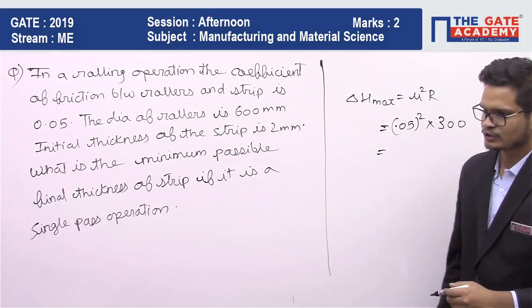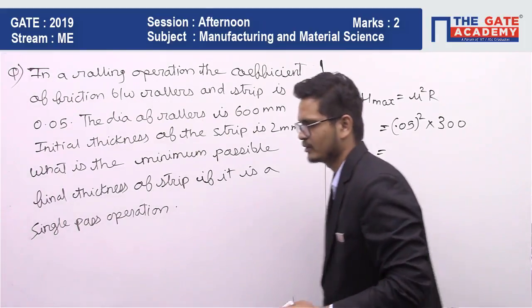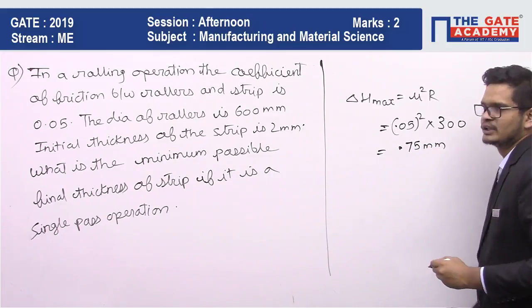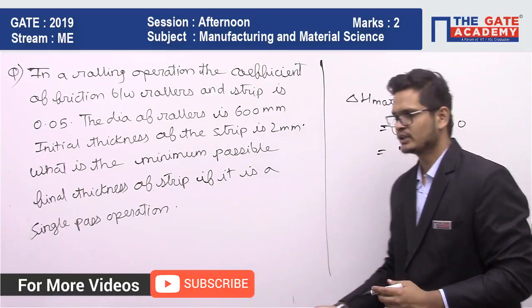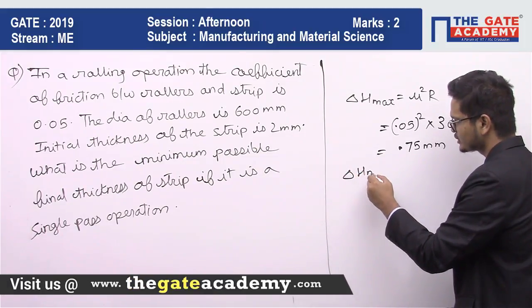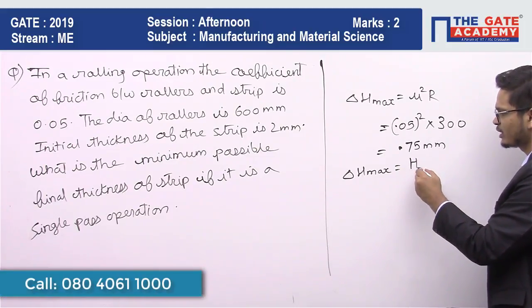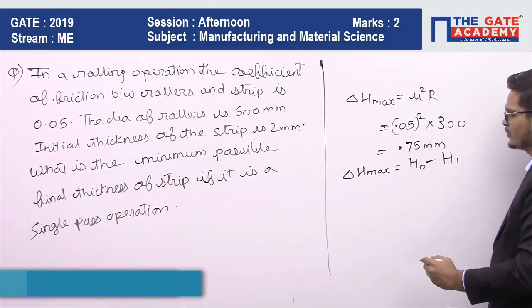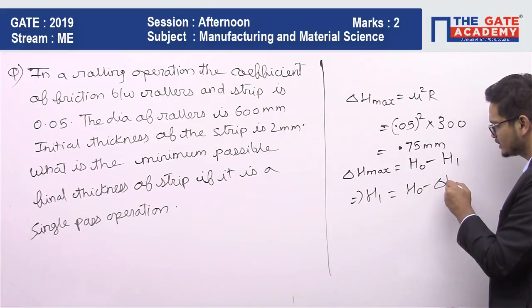This is delta H max. So the value of delta H max that we get is 0.75 mm. This is the maximum possible reduction. So what is the minimum possible final thickness? That is initial thickness minus delta H max. We write delta H max as H0 minus H1, so H1 becomes H0 minus delta H max.